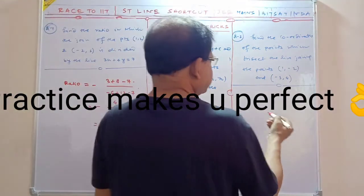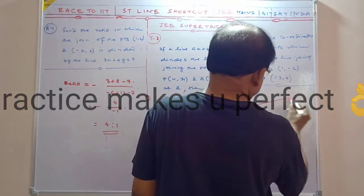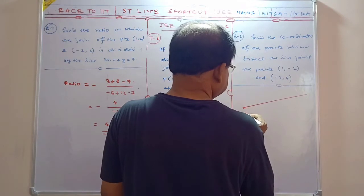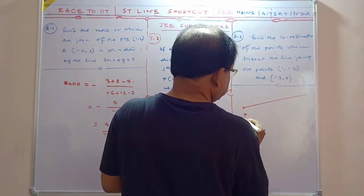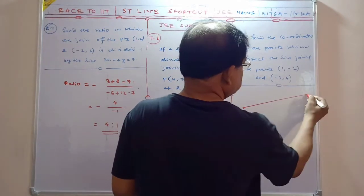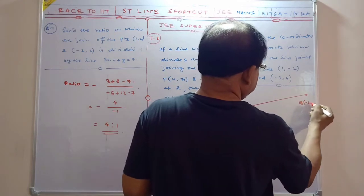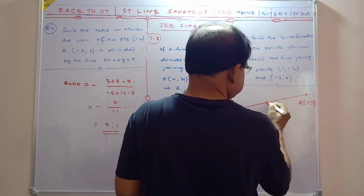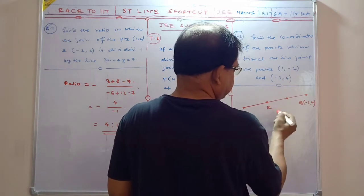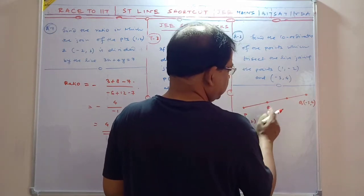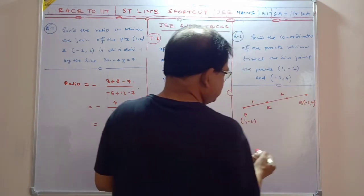Same way, now this is trisections. Trisections ka matlab hai—there's a line. Suppose this is P at (1, -2) and this is Q at (-3, 4). Suppose this is divided into 3 equal parts from here.